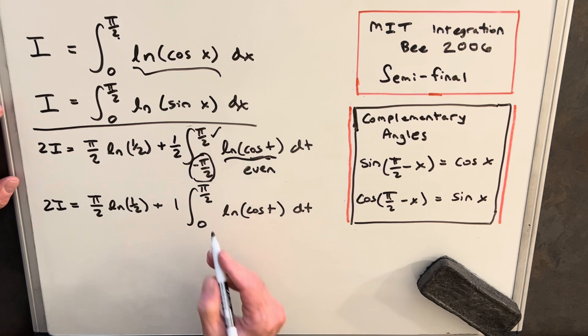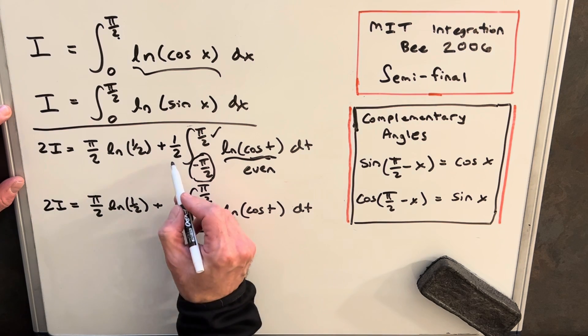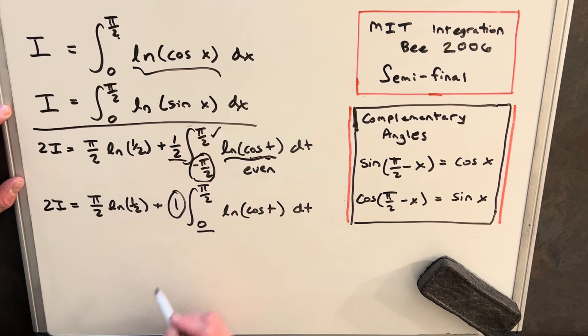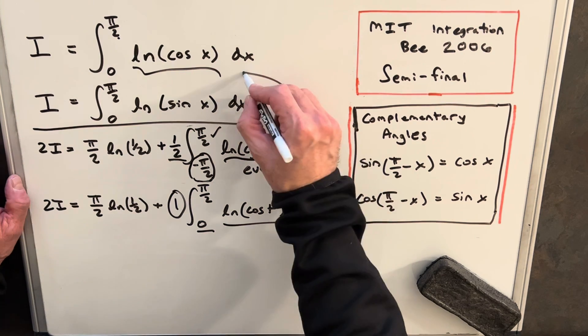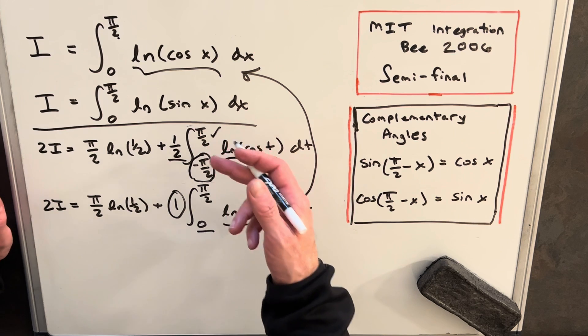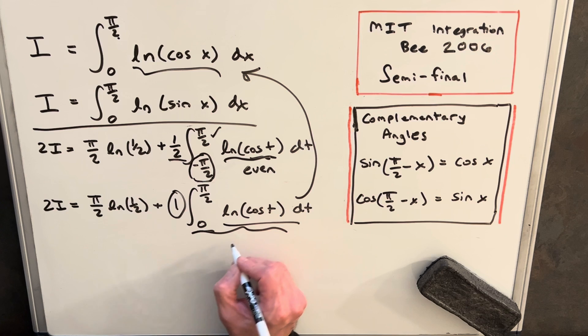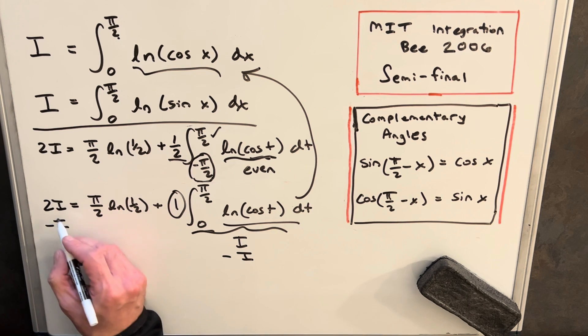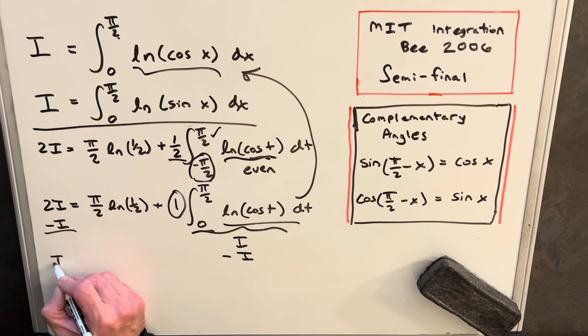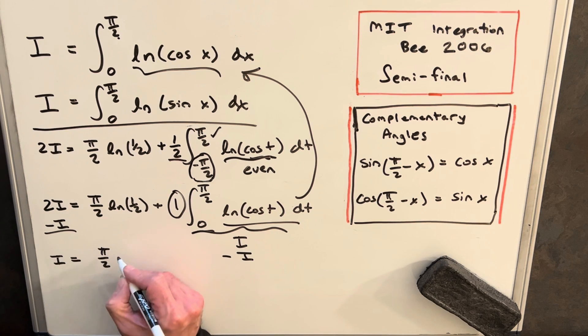Okay, so then making that change, you'll see now we've changed our boundary here to 0, we've multiplied a half by a 2, and we get a 1 here. And now I think we have everything we need, because you'll notice this is actually exactly the same as this. The variable name doesn't matter because it's a definite integral. So what we have here, this piece, is just going to be I. And so we can subtract an I on both sides, and we just get back here our final solution, which is going to be pi over 2 times ln of 1 half.